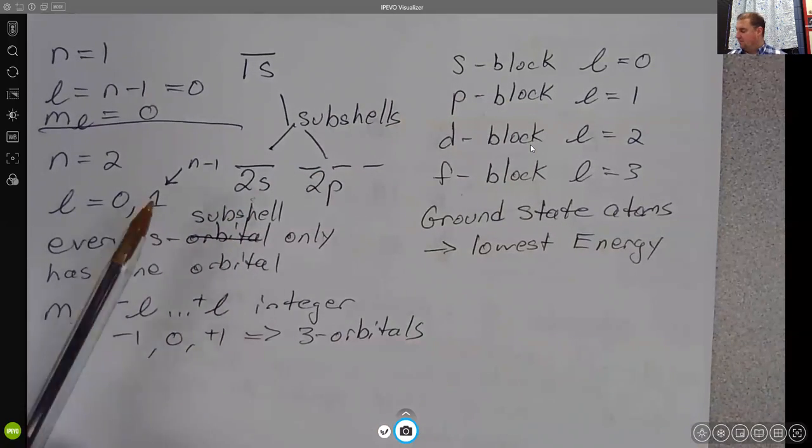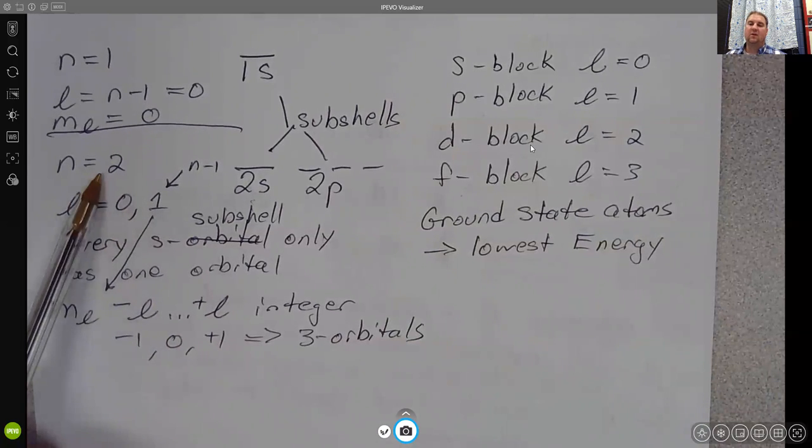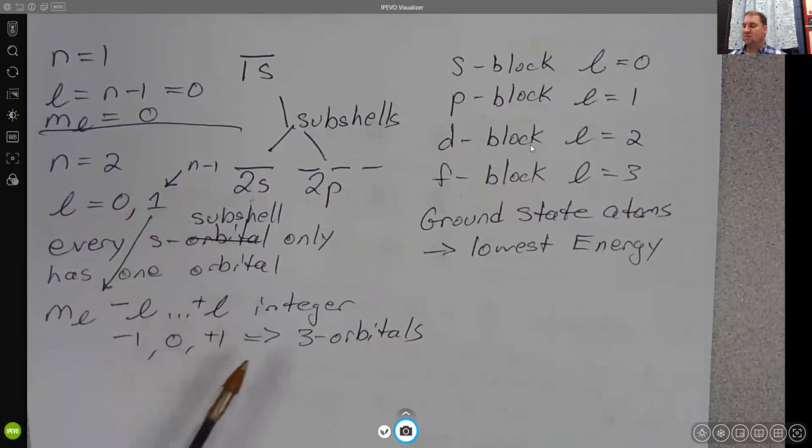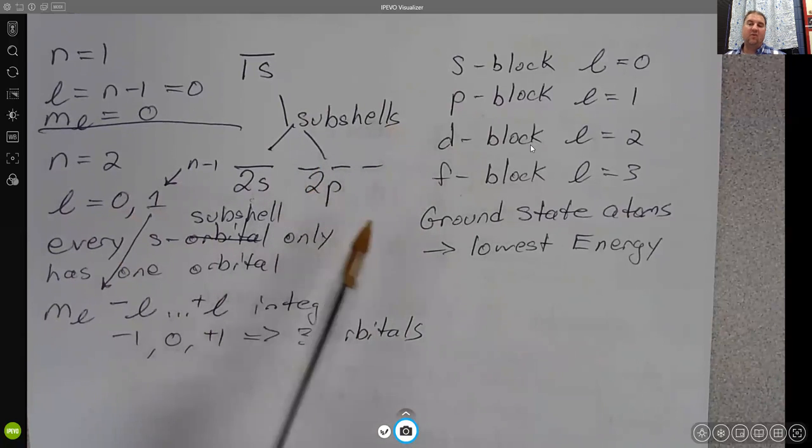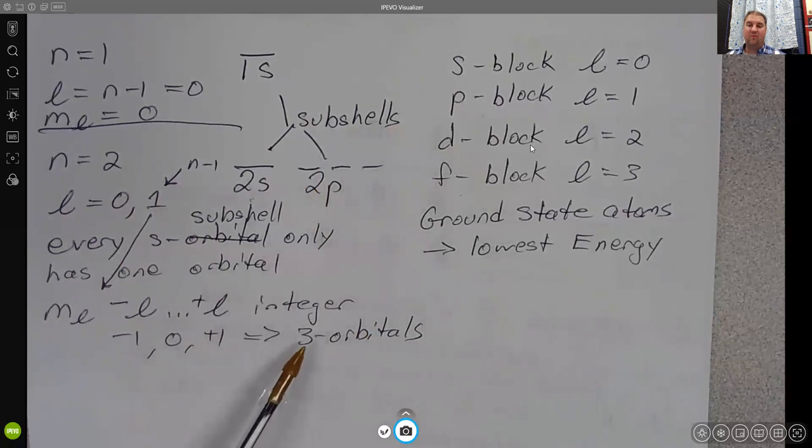Is it going to matter if L is 1 if we're in the third shell or the fourth shell? No. We're still going to be looking at a p subshell, which means we're still going to be looking at three orbitals no matter which shell that is. So the 3p will have three orbitals. The 4p will have three orbitals.